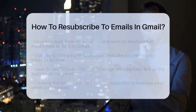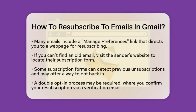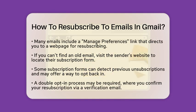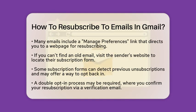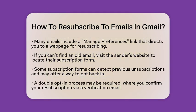Next, many senders include a manage preferences link in their emails. Clicking this link usually takes you to a web page where you can opt back into the mailing list. This method is user-friendly and allows you to actively choose to receive emails again.